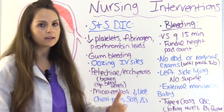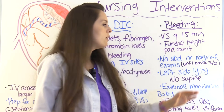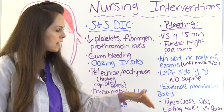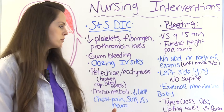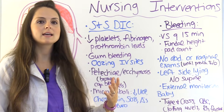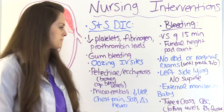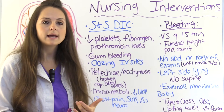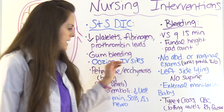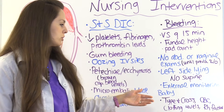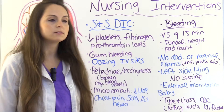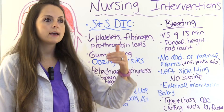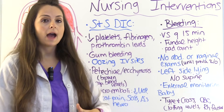Place the patient on her left side to increase perfusion to the uterus — avoid the supine position. Use external monitoring to assess the baby's heart rate and watch for any abnormalities. Draw labs per physician's order, including a type and crossmatch since blood products will likely be needed. Also determine if she is Rh negative, as she may need a RhoGAM shot. Obtain a CBC and clotting levels.